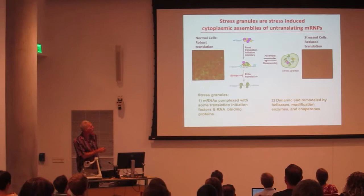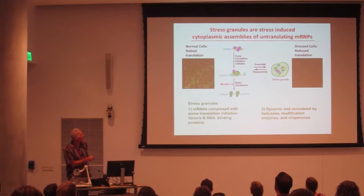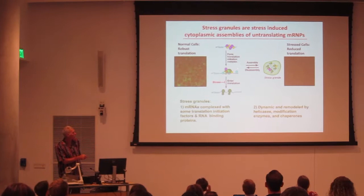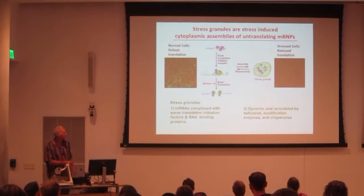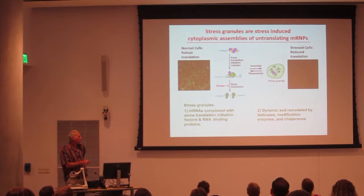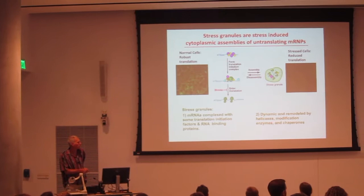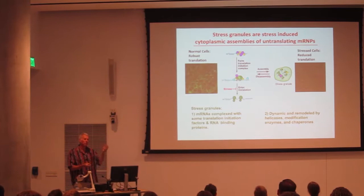Stress granules are RNA-protein complexes of mRNAs with an association of RNA binding proteins and some translation factors. They're called stress granules because they typically form when translation initiation is blocked, and that happens during a lot of stress. When a stress inhibits translation, this pool of RNA-protein complexes builds up and they assemble into these larger structures which you can see. These are very dynamic—they will merge, they will come apart, and proteins exchange at rates of around 30 seconds from them.